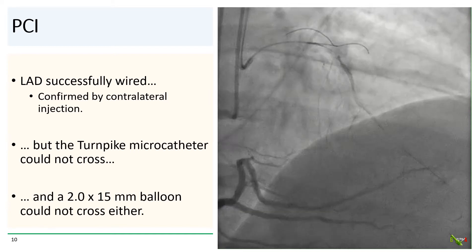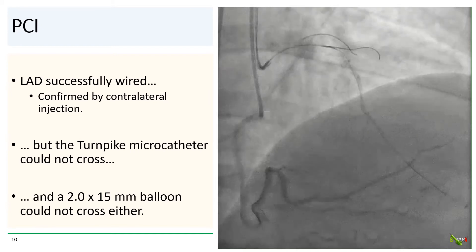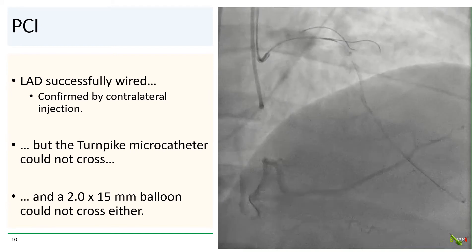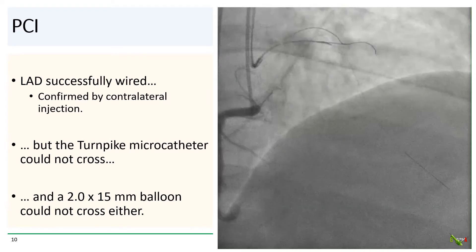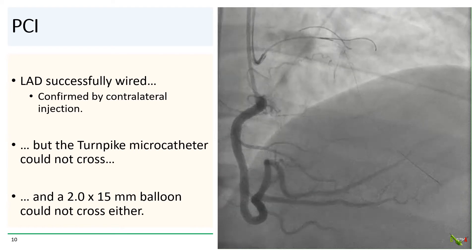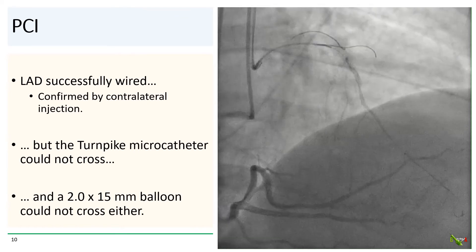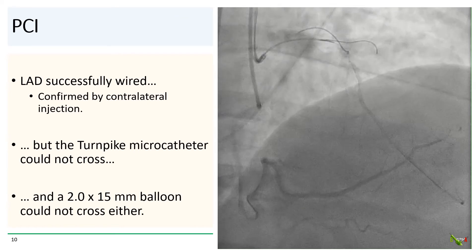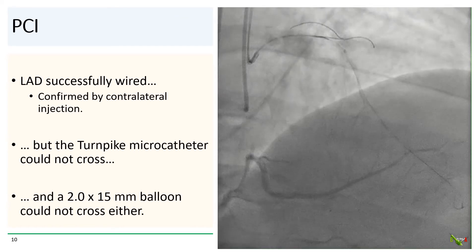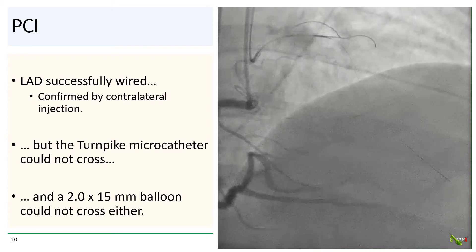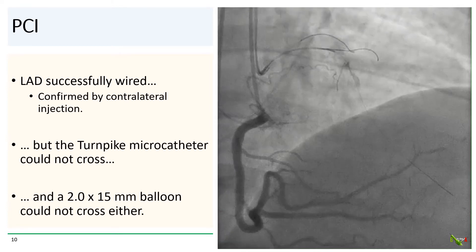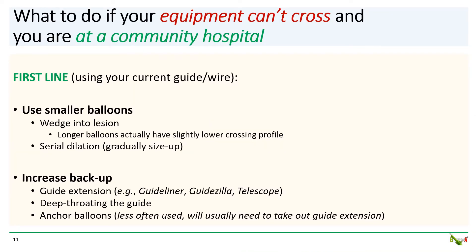After a little effort, the LAD occlusion was successfully crossed. But the turnpike microcatheter could not follow. This is usually not a very good sign. A 2.0 millimeter balloon could not cross either. So what do you do if your wire crosses but your equipment cannot cross and you are at a community hospital?